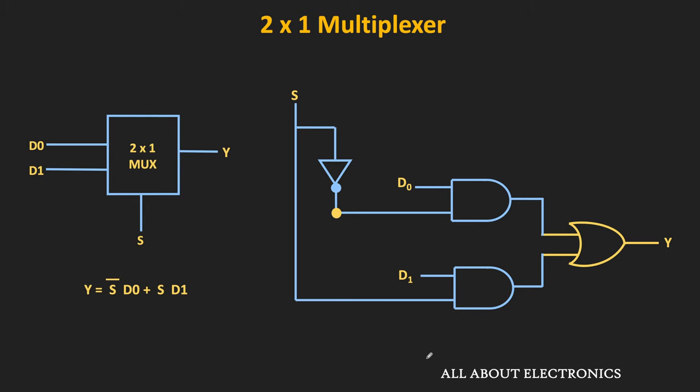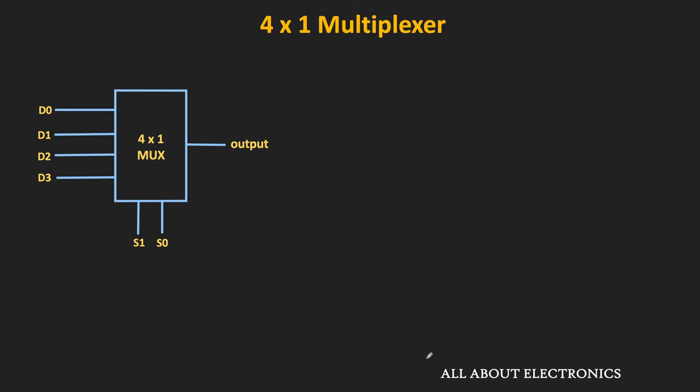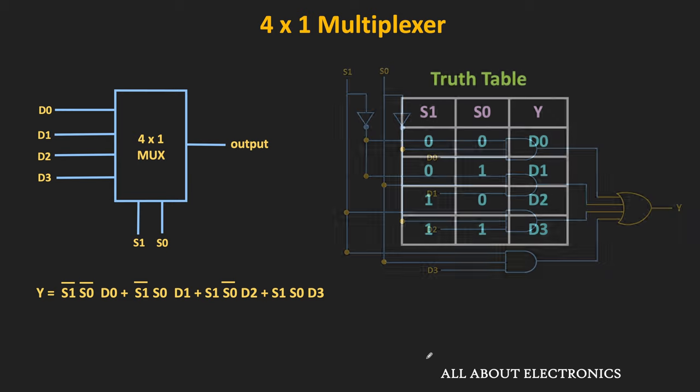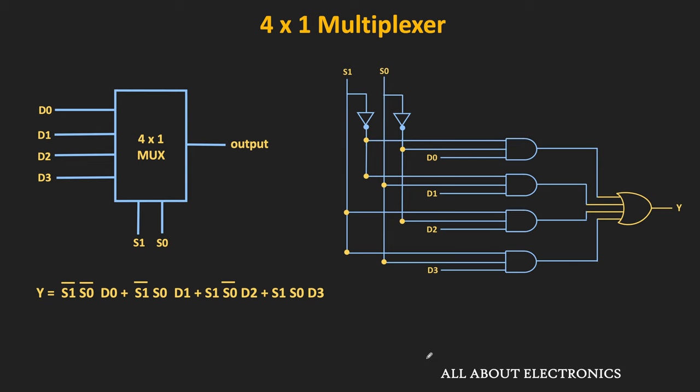Let us now see the logic circuit of the 4-to-1 multiplexer. In the 4-to-1 multiplexer, there are 4 inputs and 1 output, and to select any one of the 4 inputs, there are 2 selection lines. Depending on the inputs to the selection line, any one input is connected to the output. This is the truth table of the 4-to-1 multiplexer. When both S0 and S1 are 0, then D0 gets connected to the output. When both S1 and S0 are 1, then D3 gets connected to the output. From the truth table, we can write the algebraic expression and design the logic circuit for the 4-to-1 multiplexer.